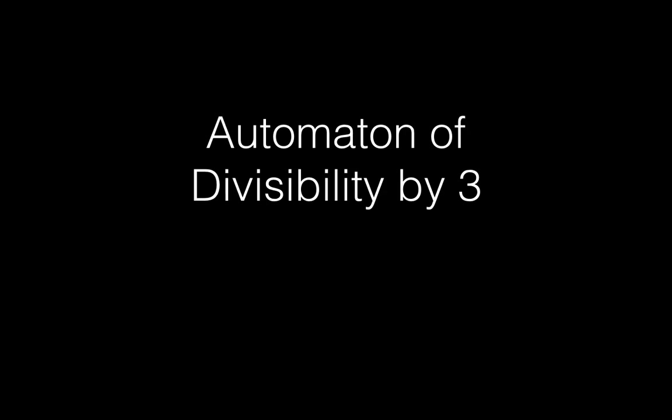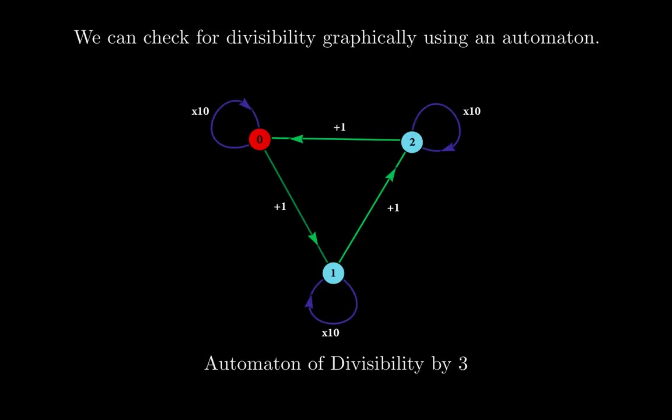Hello and welcome again to another video on number theory. Today we will talk about an automaton of divisibility by 3. We can check for divisibility graphically using an automaton. So what is an automaton? An automaton is this type of picture that you see here. I'm going to explain what it means, what all the components are, and how we can use this automaton to check for divisibility by 3.